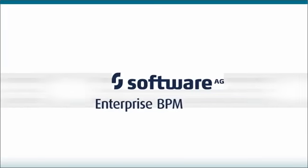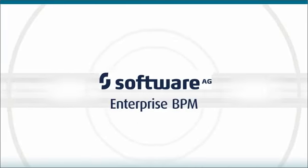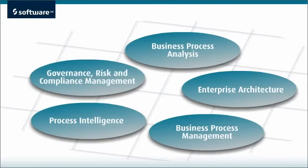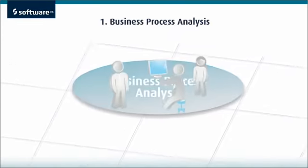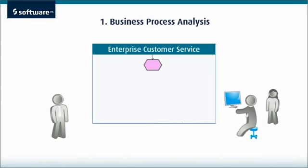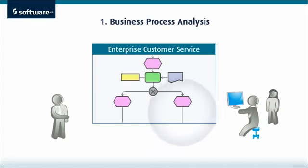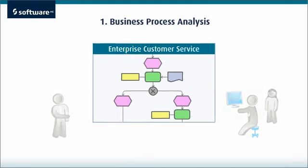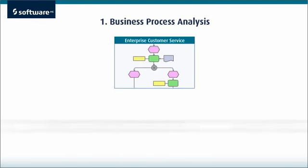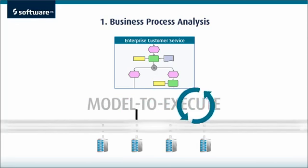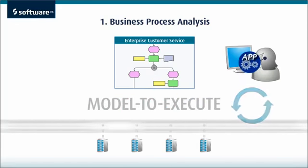That's the Software AG approach to enterprise business process management. There are five ways to get started. With business process analysis, you describe the corporate strategy, then analyze, design, or redesign relevant business processes. Our technology can translate business process models into technical models and then into applications.